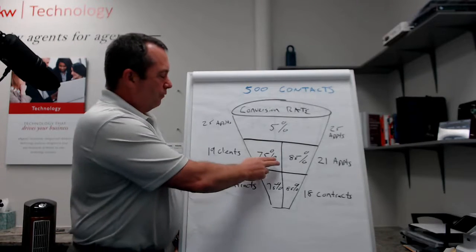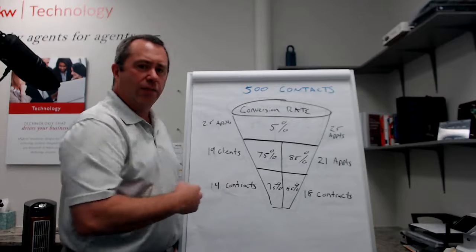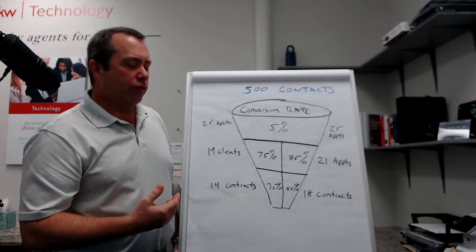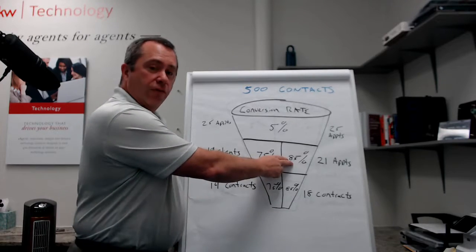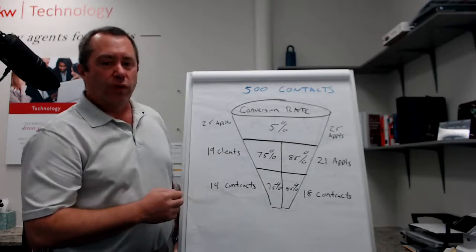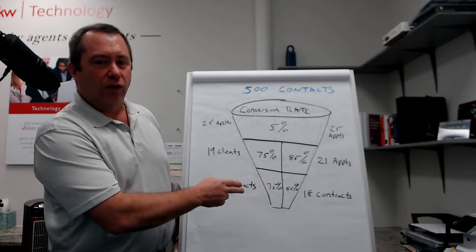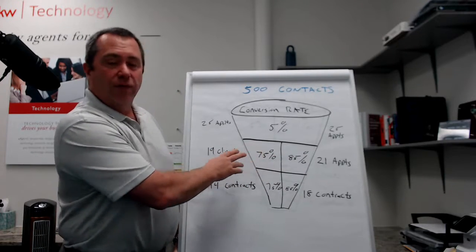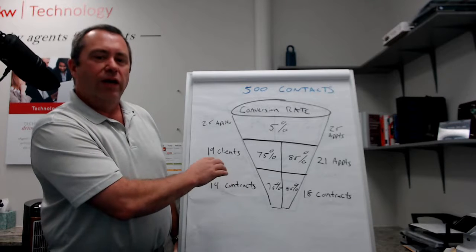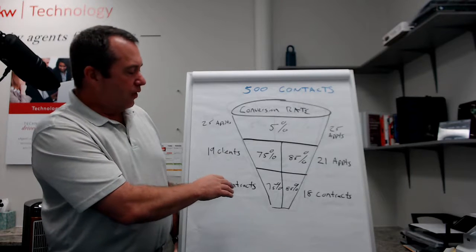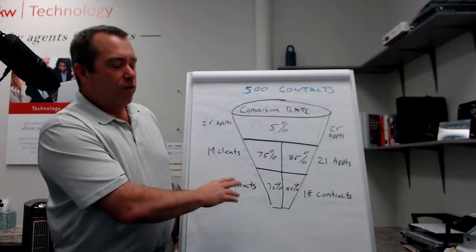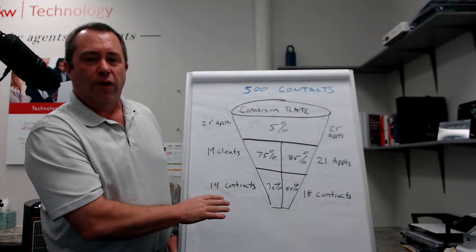What if we could have a better conversation at this point, at the appointments? Increase our closing ratio from 75% to 85%. You're going to see we're at 21 appointments and 18 closings. Just by having better conversations on your appointment and better conversations around your contracts, you're going to increase your business for transactions without working any harder.